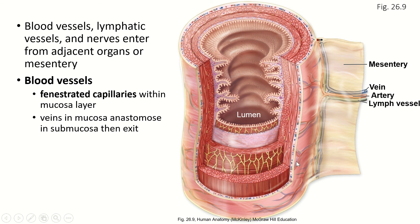The blood vessels enter from the mesentery and whatever layer of serosa membrane is connecting that part. Within the mucosa of almost the whole GI tract, the capillaries are fenestrated. That is so that nutrients broken down into small enough molecules within the lumen can easily get into the bloodstream. So within the mucosa, we have fenestrated capillaries — those are the ones with little holes in the walls.